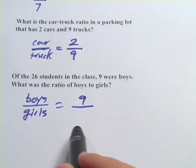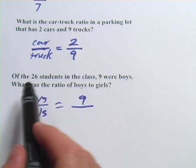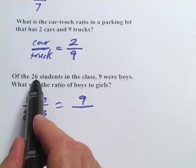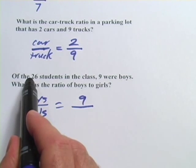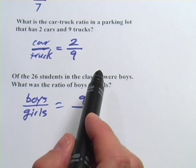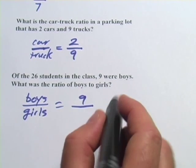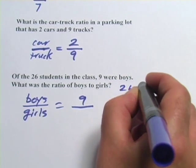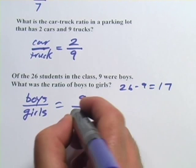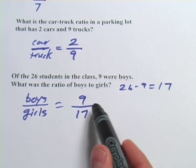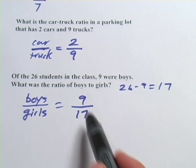I have to figure out the number of girls if I want girls on the bottom. Whoever's not a boy in a class is going to be a girl, so if I take 26 and subtract the nine from it, that should be the right answer. That is 26 minus 9 is 17, so there are 17 girls. So my boys to girls ratio is 9 to 17.